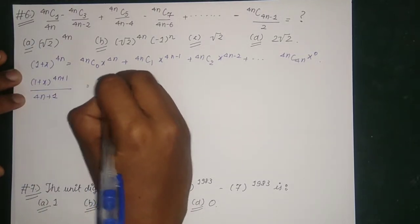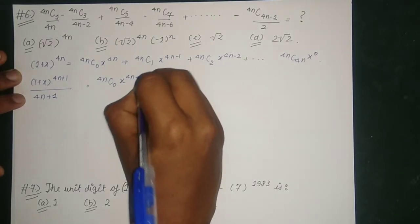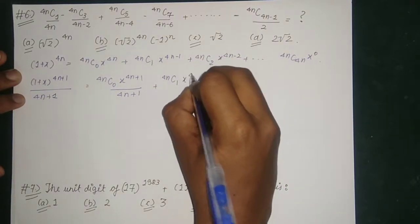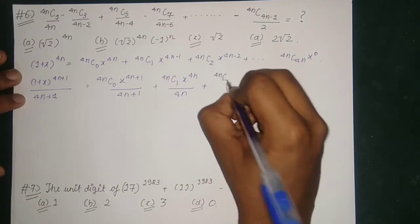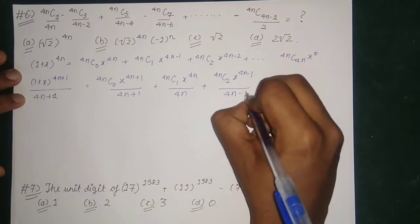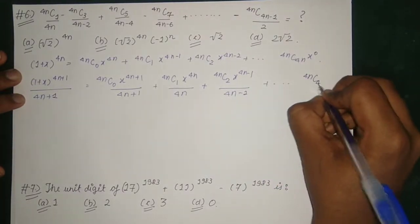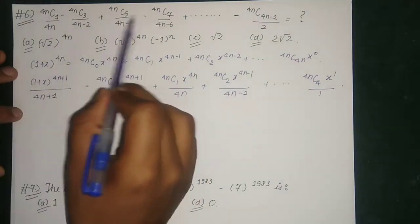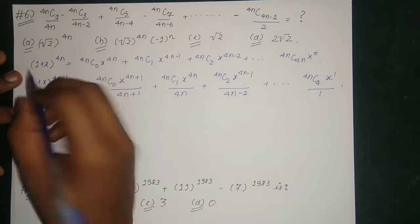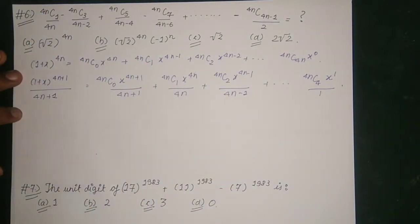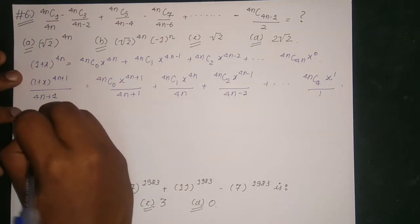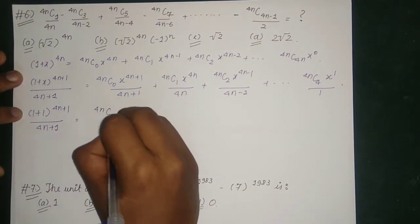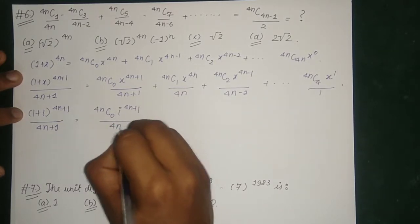Integrating both sides we get: 1 plus x to the power 4n plus 1 upon 4n plus 1, equal to 4nC0 times x to the power 4n plus 1 upon 4n plus 1, plus 4nC1 times x to the power 4n, plus 4nC2 times x to the power 4n minus 1 upon 4n minus 1, and it goes on till 4nC4n times x to the power 1 upon 1. Since the sign is changing and powers decrease by 2, we now put x equal to iota.